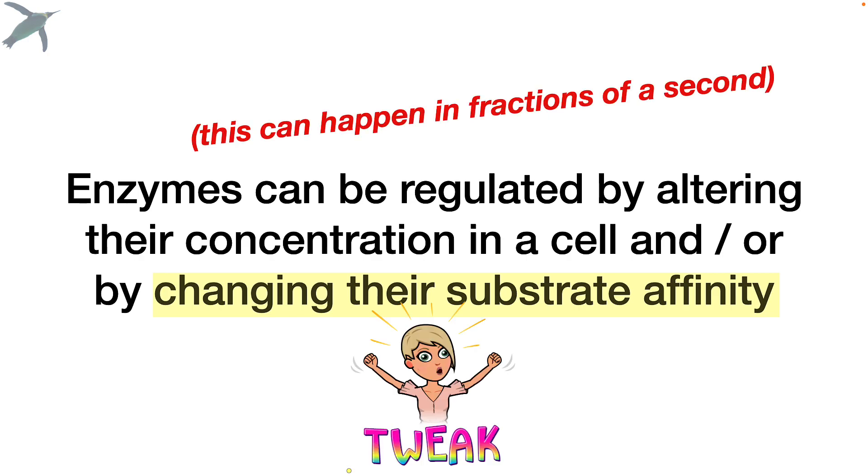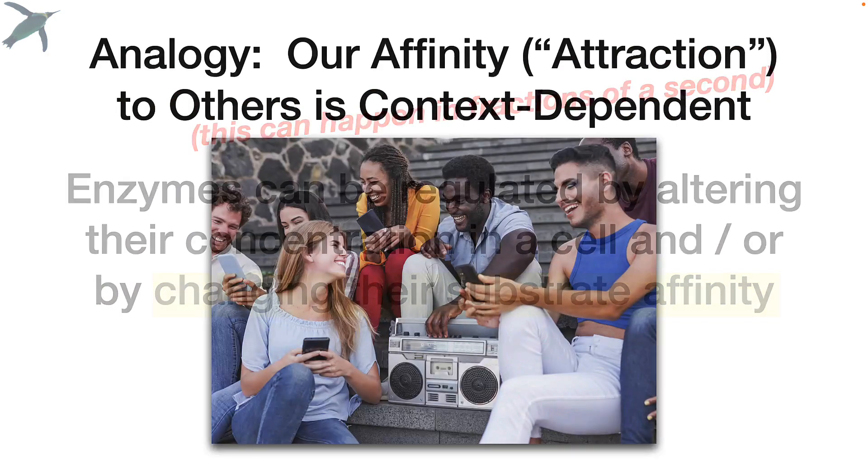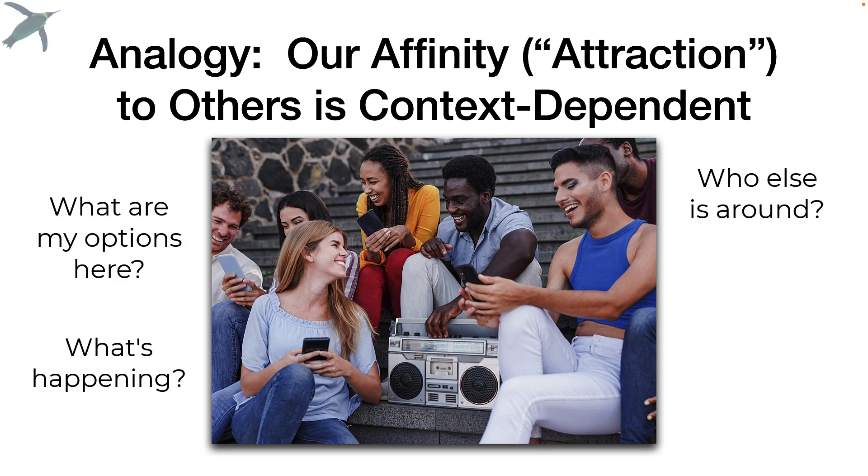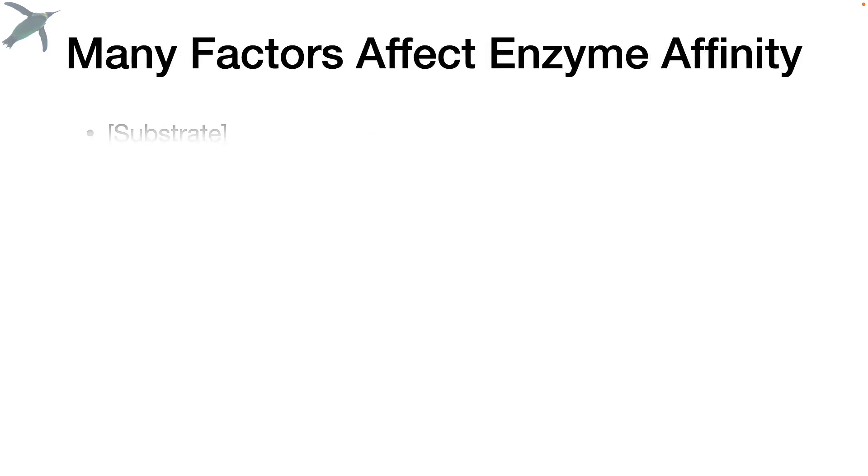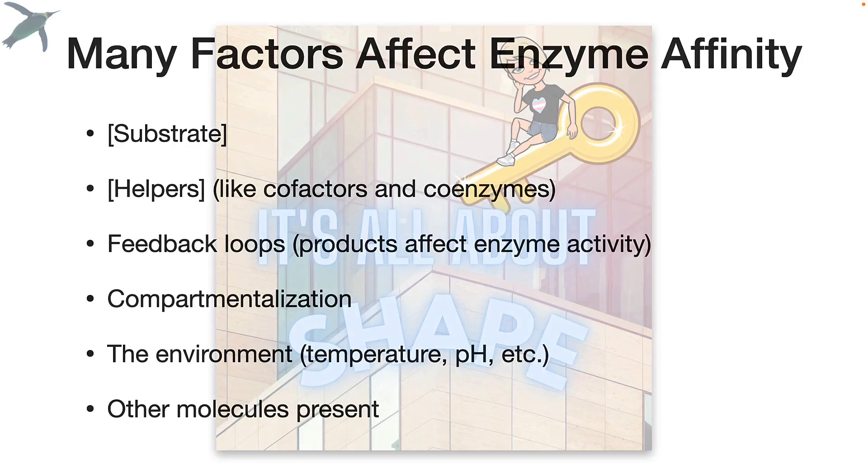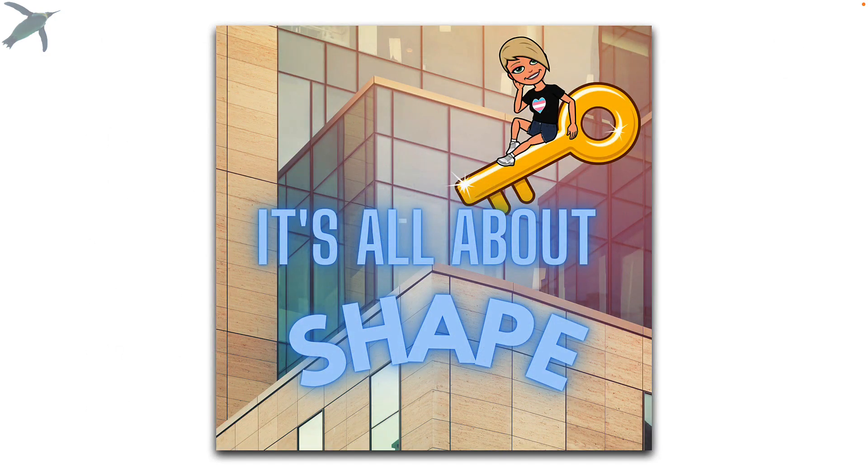You can basically tweak the enzyme to make it go faster or slower. Now, our affinity or attraction for others is context dependent. So your level of attraction varies based on what else is happening, who else is around, and so on. And actually, enzymes work the same way. All of these things affect enzyme affinity. And the reason they affect enzyme affinity is because they can all affect the shape that the enzyme takes. And that's really the theme here. It's all about shape.